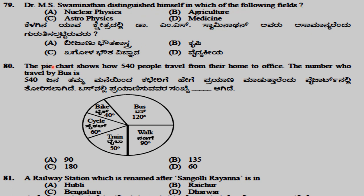In a pie chart showing how 540 people travel from home to office, the number who travel by bus is the highest. Although the chart shows 120, the answer given is 180, so the answer is 180.